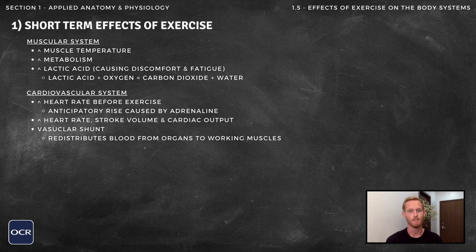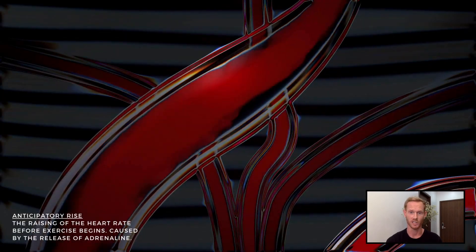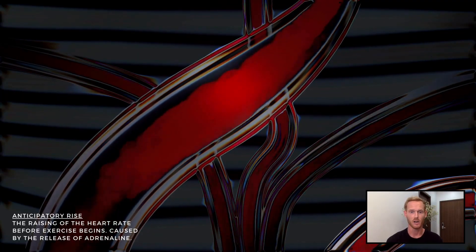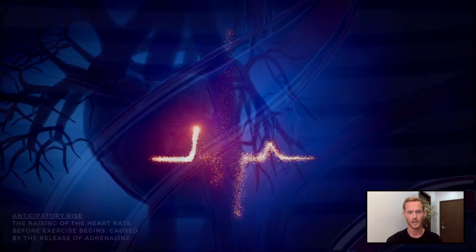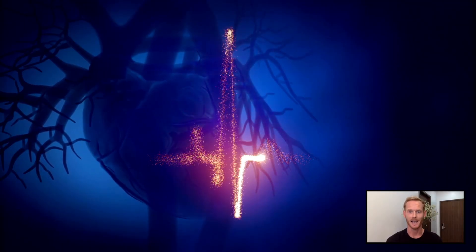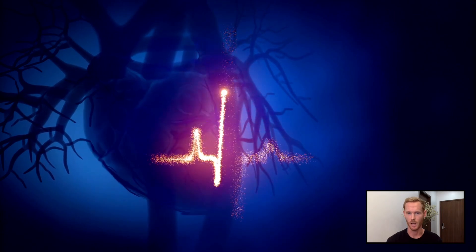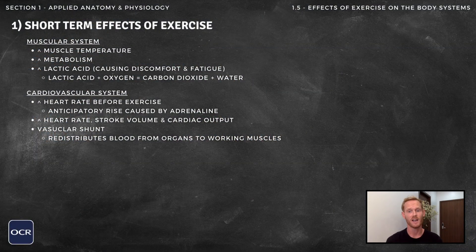The cardiovascular system adapts in many ways to the immediate demands of exercise. Just before exercise, heart rate starts to rise as adrenaline is released, leading to an anticipatory rise which ensures enough oxygen is delivered to the muscles and waste products including carbon dioxide are removed. During exercise, heart rate, stroke volume and cardiac output all increase significantly as the demand for oxygen in the muscles goes up. The vascular shunt mechanism redistributes blood from areas like the digestive system to the muscles, further increasing oxygen supply.